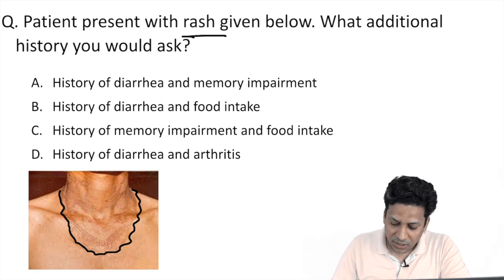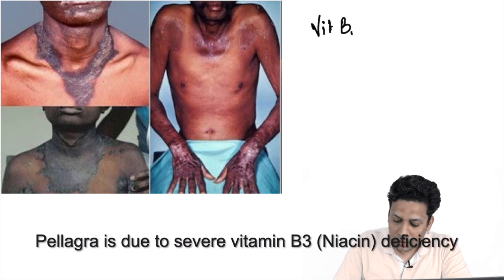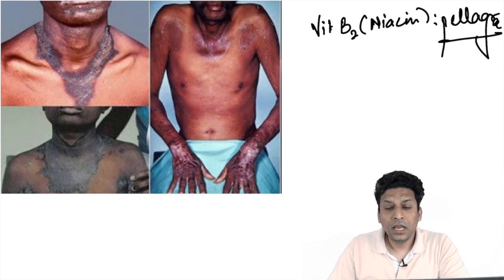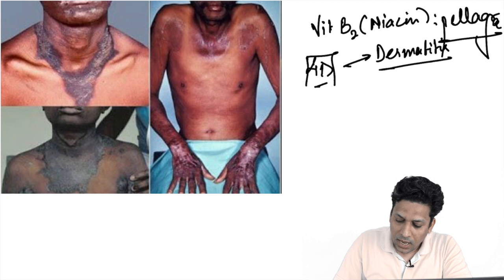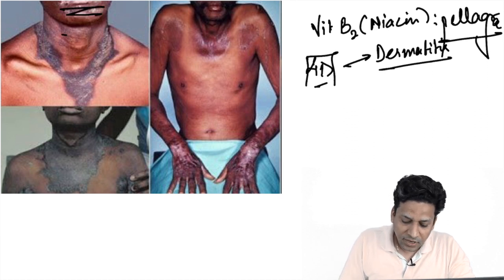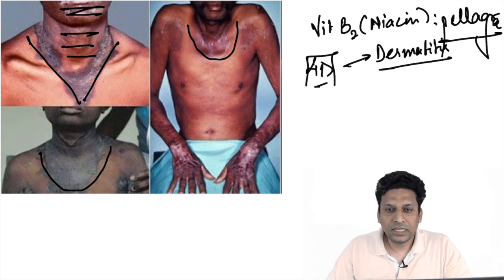This image is suggestive of a condition which is a nutritional deficiency occurring due to vitamin B3, that is niacin deficiency — the patient is suffering from pellagra. In pellagra, there are four Ds, and one of the Ds is dermatitis. This dermatitis specifically occurs over sun-exposed areas. Because it occurs over sun-exposed areas, the face, neck, and V of the neck are involved, giving rise to the characteristic Casal's necklace appearance over the demarcated area of the neck. This is a very characteristic finding seen in these patients.